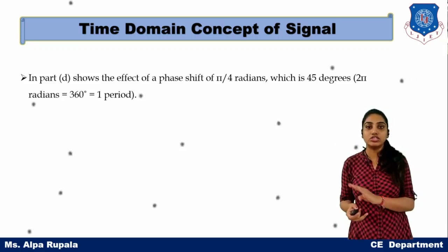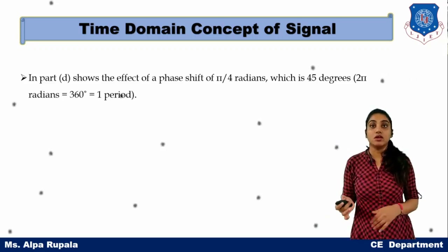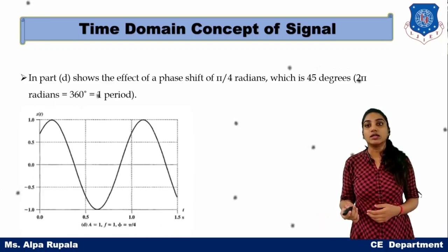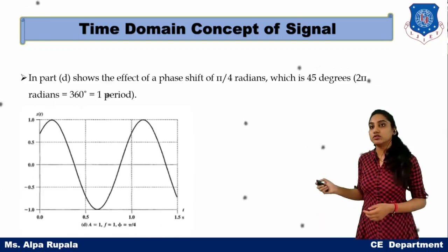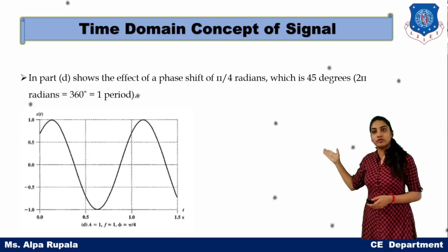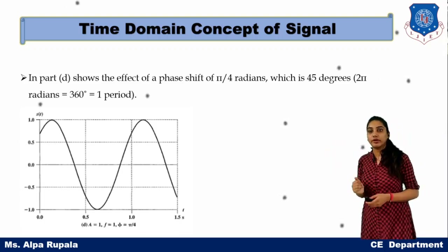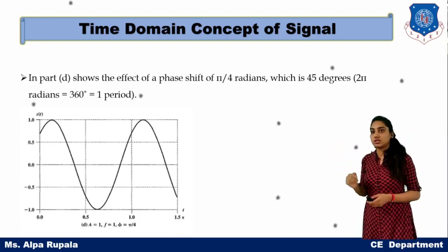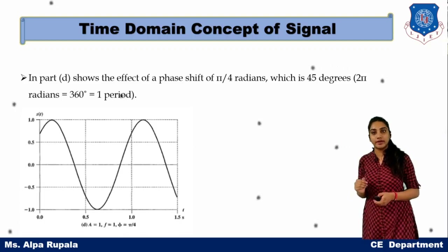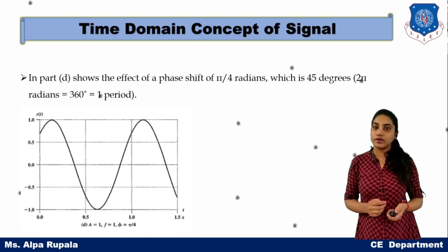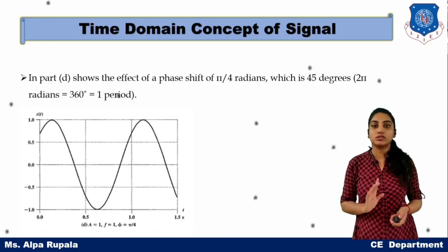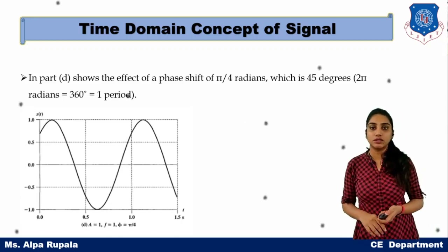In all the previous examples, the phase value was 0. But if the phase value is 45 degrees, the signal's starting point shifts to the 45-degree position as shown in the diagram. The frequency value remains 1, so only one signal cycle occurs in one second.